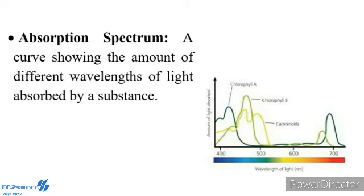Spectrally, chlorophyll A has different forms which are often known after the wavelength that is absorbed at maximum. For example, chlorophyll A673, chlorophyll A683, chlorophyll A703.